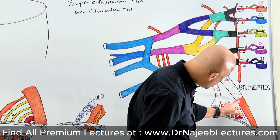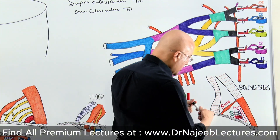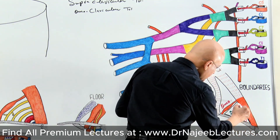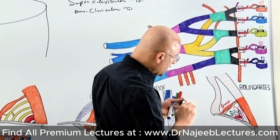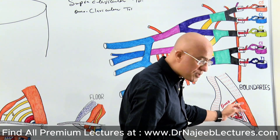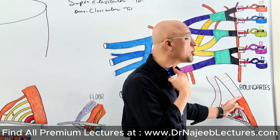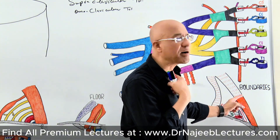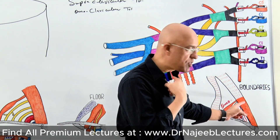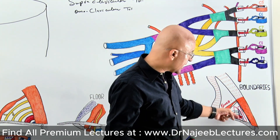If this is the triangle we are studying, then what boundaries does it have? It has this boundary here — the lower part of the sternocleidomastoid, which is present anteriorly. And inferiorly, it is just above the clavicle.